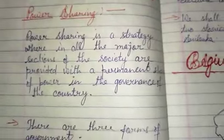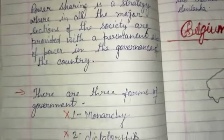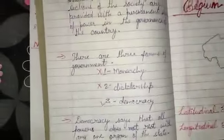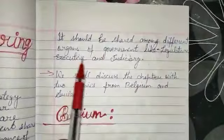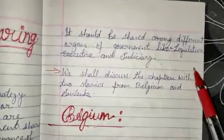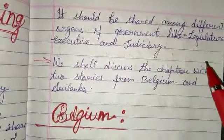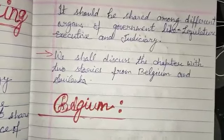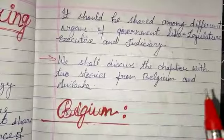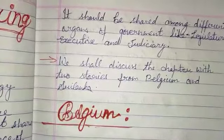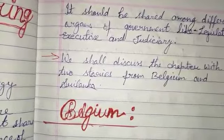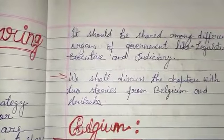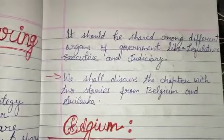Democracy emphasizes that all the powers don't rest with any one organ of the state; they must be shared among different organs of government like legislature, executive and judiciary. Students, you have studied about these organs of government in the previous class, in class 9th, in the chapter called Working of Institutions. In that chapter, you studied about their jurisdiction or the authority area of these organs of government.